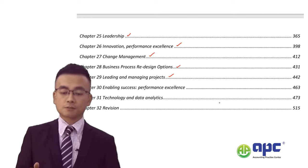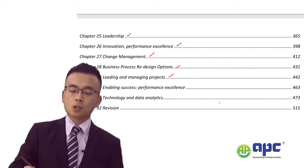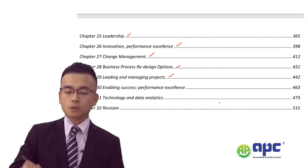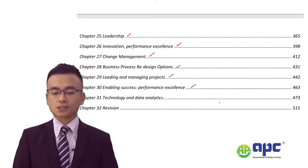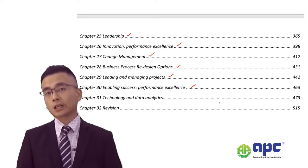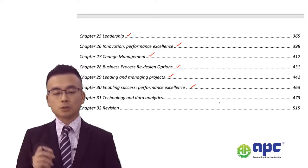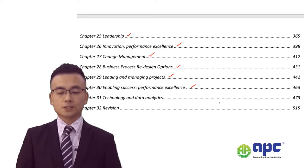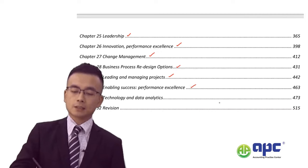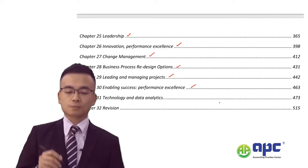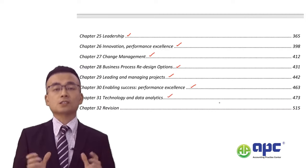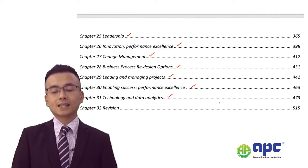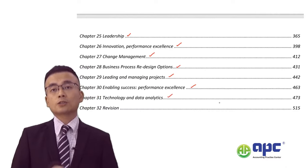Chapter 30 looks at how to ensure business success using a particular model. The final chapter, chapter 31, covers technology and data analytics — topics such as big data and blockchain.